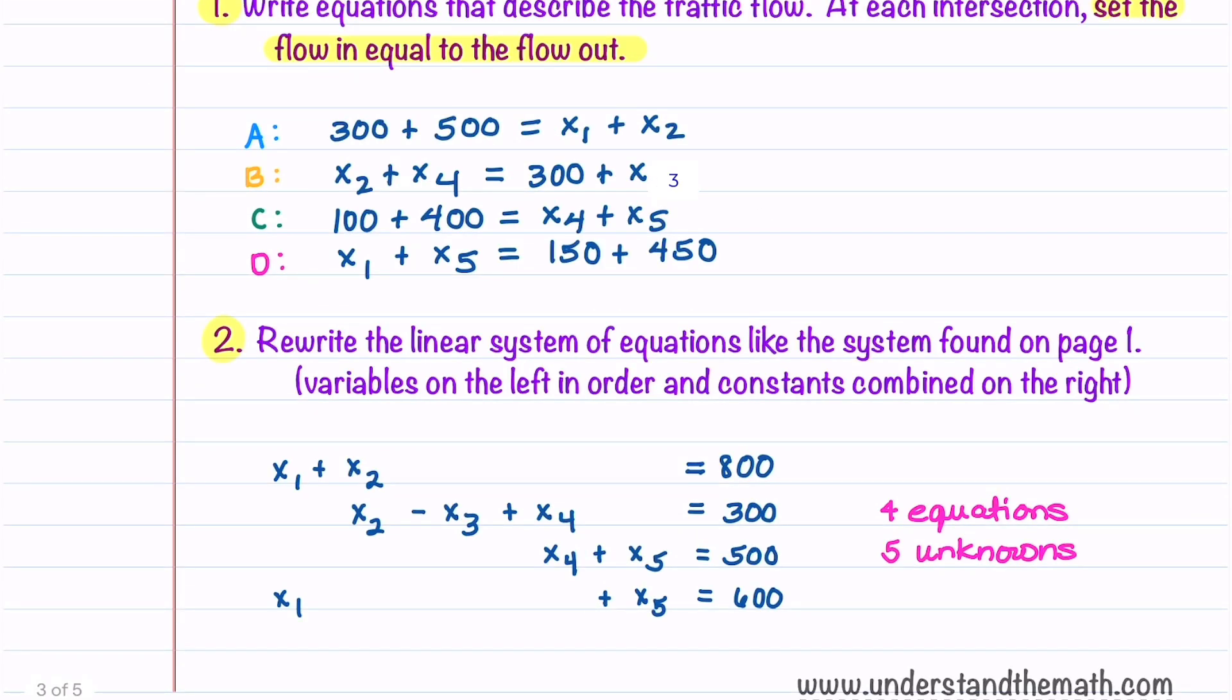To save us some time I've rewritten the equations. In our first equation we have x1 and x2 on the left and 800 on the right. All we did was rearrange the terms from the equation for intersection A. We did the same thing for the other three equations.